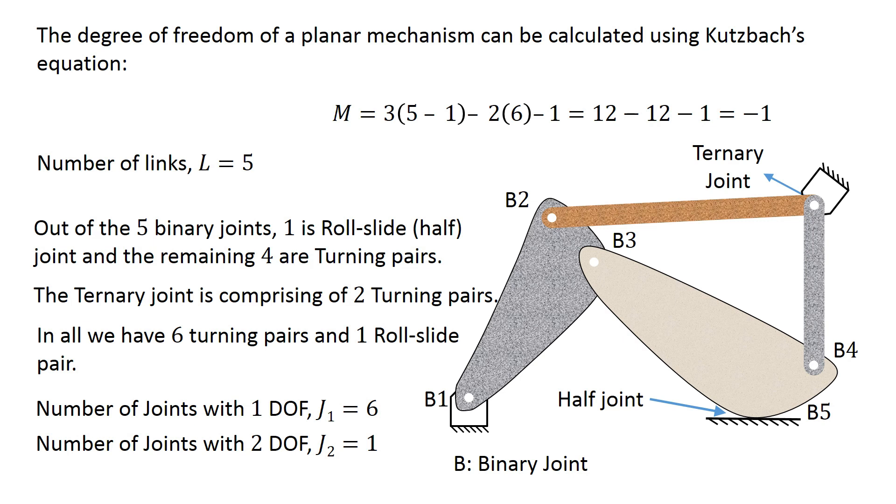Such type of structure that has negative degree of freedom is known as a superstructure.